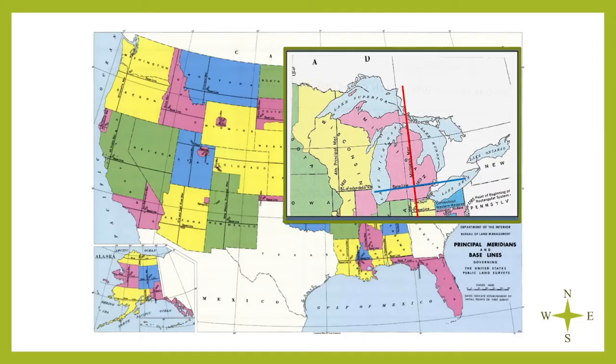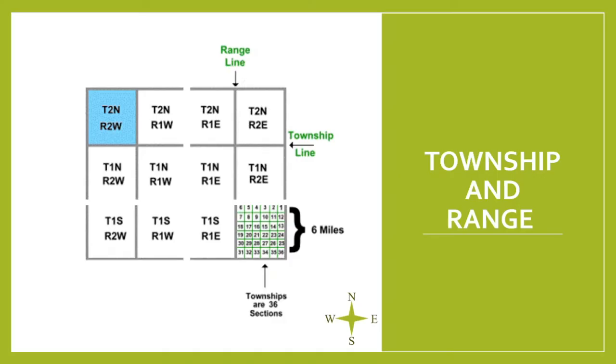In Michigan, this reference point falls roughly in Jackson City. A closer look at that intersection shows the numbering and position of all townships relative to that reference point.